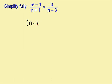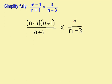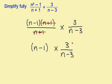I get n minus 1, n plus 1. That's over n plus 1 and then multiplied by 3 over n minus 3. This fraction here can be simplified to n minus 1. Leave it in its brackets for now.